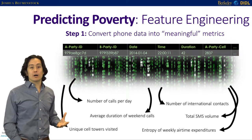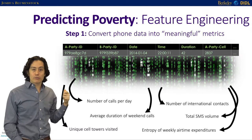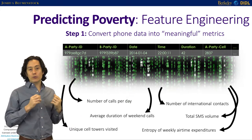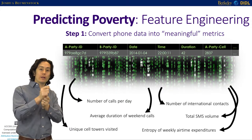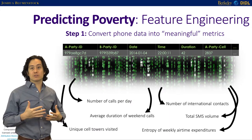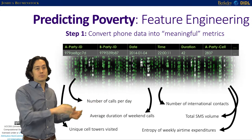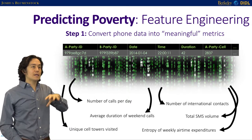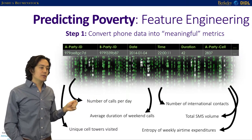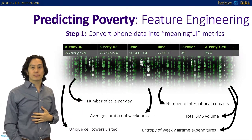Buried in these transaction logs are interpretable, meaningful features — things like the number of calls per day. You can write a database query to pull out for each person the total number of calls per day. There are literally hundreds of thousands of other metrics you can derive, like the average duration of calls made on a weekend, or the number of unique cell phone towers a person visits — which captures something about physical mobility.